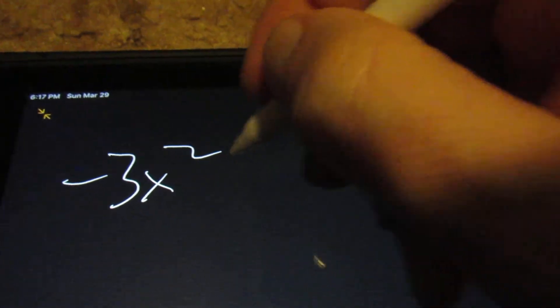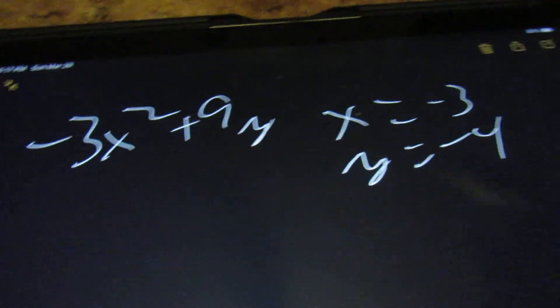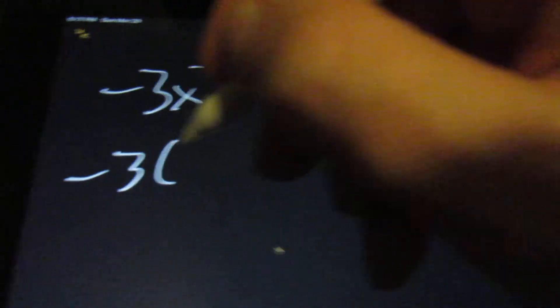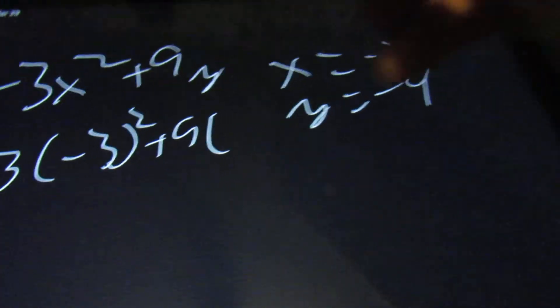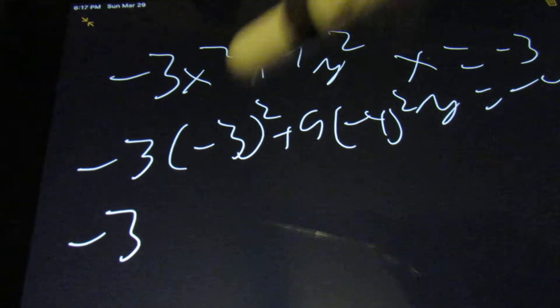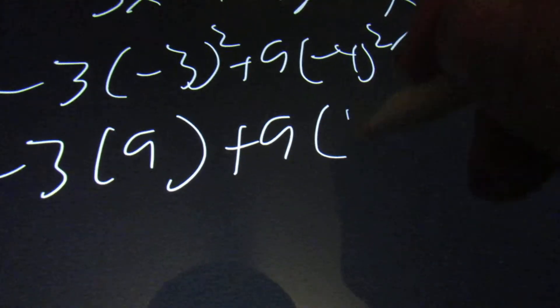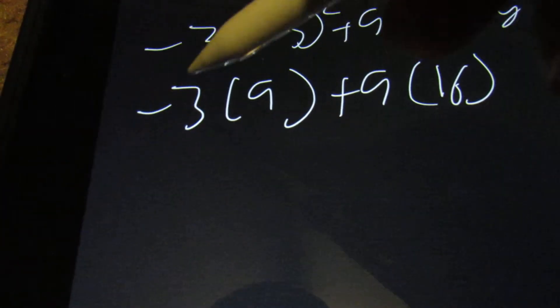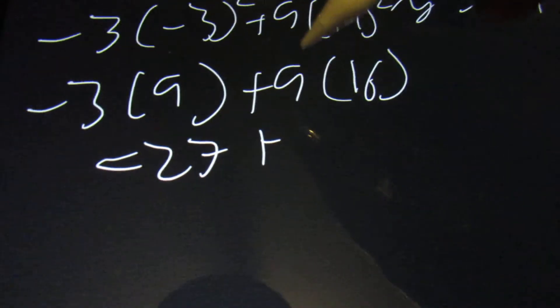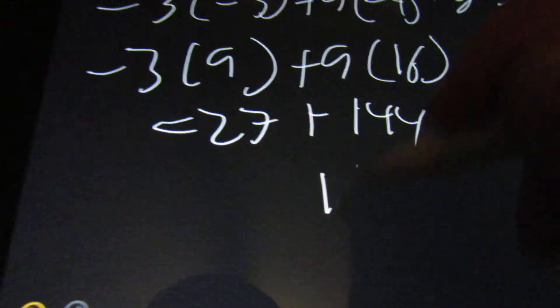So next, let's say that we have something with a little bit more. Negative 3x squared plus 9y squared, when x is negative 3 and y is negative 4. Again, use your parentheses here. So negative 3 and the negative 3 is in parentheses squared, plus 9—oh, keep that, do the y squared—and negative 4 squared. So now we're going to keep the negative 3 because we do the exponents first. Negative 3 squared becomes positive 9. We have a plus 9, negative 4 times negative 4 is 16. So now we can do our multiplications. Negative 3 times 9 is negative 27, plus 9 times 16 is 144. So we have negative 27 plus 144, which is 117.